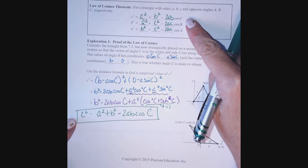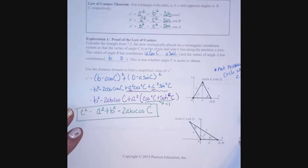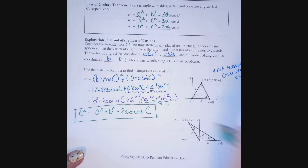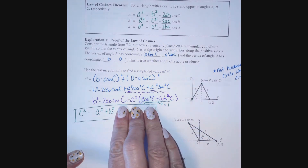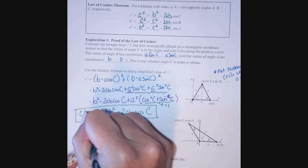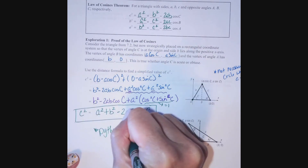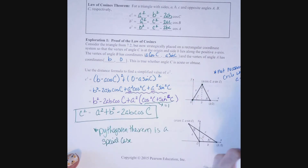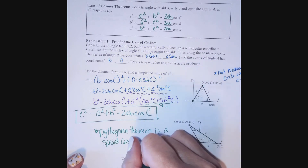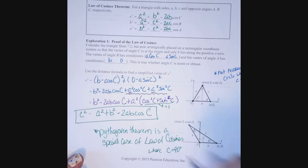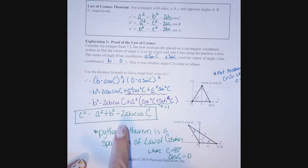Here's an interesting thing: what if C were a right angle? The cosine of 90° is zero, so that last term disappears, and we're left with c² = a² + b² — the Pythagorean theorem! So the Pythagorean theorem that you've known forever is just a special case of the Law of Cosines, where C is 90°, cosine C is zero, and that last term goes away.